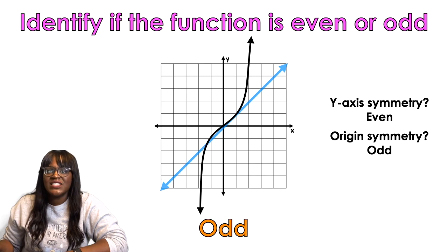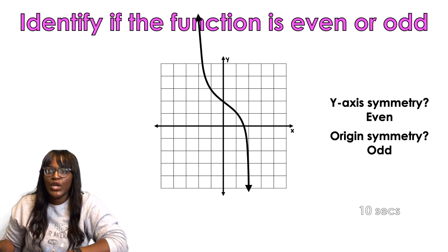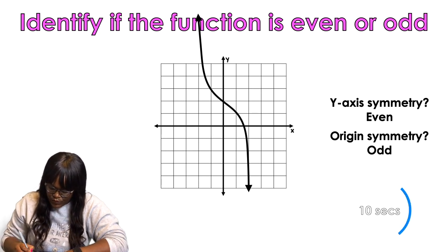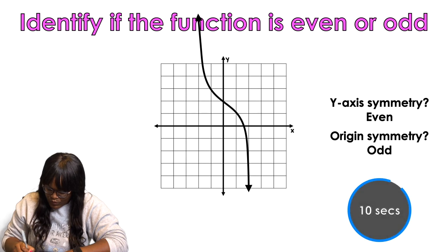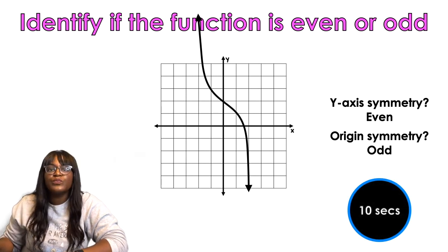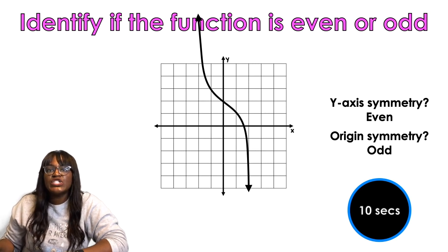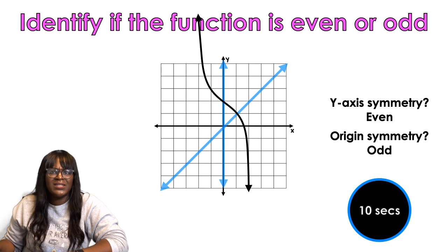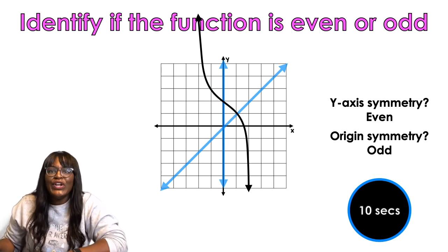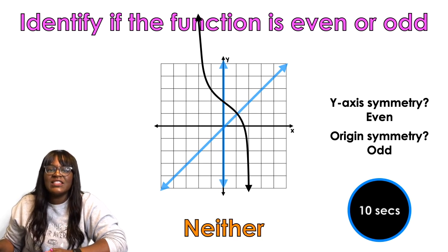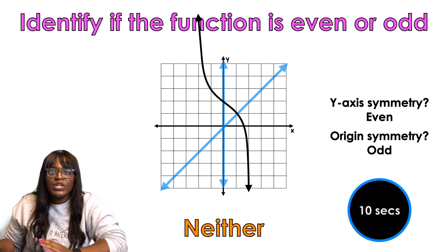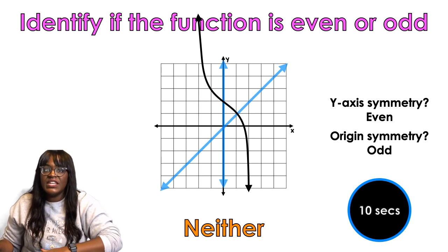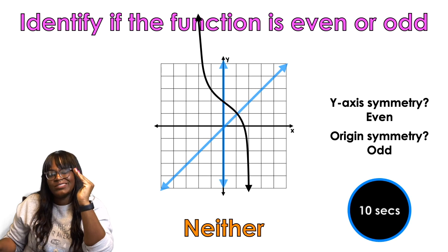Now, I'm going to let you try some on your own. You're going to have 10 seconds to think about it. So when I draw my line, y-axis, and then I draw my, nah, nah, neither. Neither, neither. Neither, honey. Because, look, if I fold it on the y-axis, that's not working. If I fold it on the origin y equals x, that's not going to work either. So neither of those works. It's a neither. Even though that's a cubic function, just moved up, it doesn't have any kind of, it has a certain type of symmetry, but not either of those specific types of symmetry.